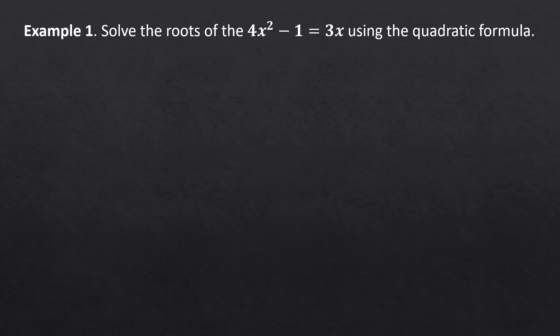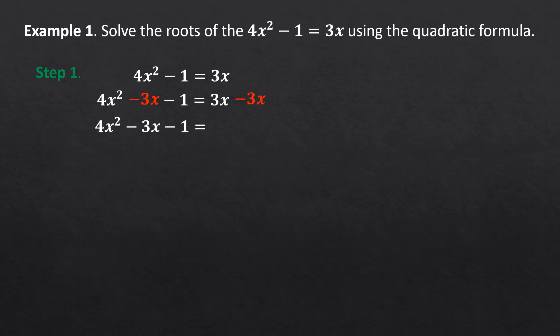Let us have Example 1. Solve the roots of the equation 4x squared minus 1 is equal to 3x using the quadratic formula. Step 1: Set the equation in standard form. As you can see, the given equation is not in standard form — 3x is not in its proper location. We need to transpose 3x using the addition property of equality, adding negative 3x on both sides. So we have 4x squared minus 3x minus 1 is equal to 0.